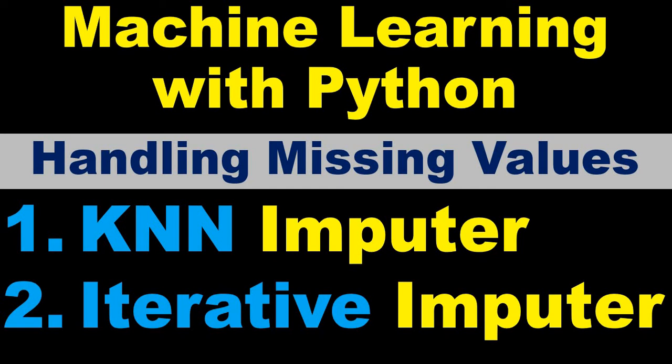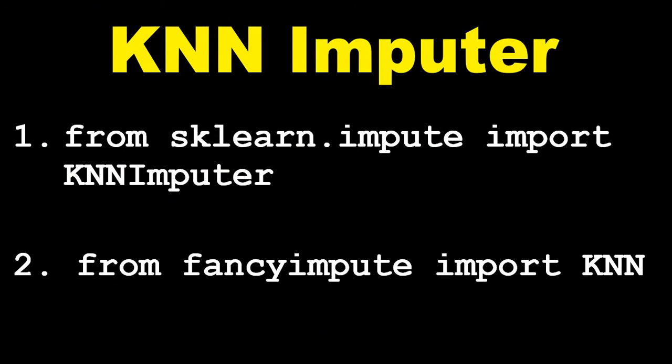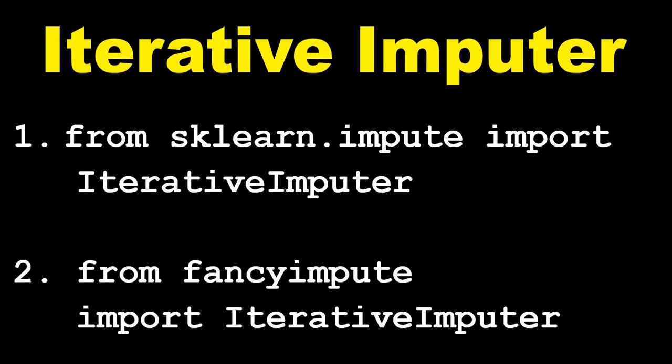Hi everyone, welcome to the session where we learn about how to handle missing values. The intention of this video is to show you the technical aspects of how to handle missing values using the KNN imputer and iterative imputer. I'll show you how to use the KNN imputer using sklearn and the fancy impute library, and similarly I will also show you how to use the iterative imputer using sklearn and the fancy impute library.